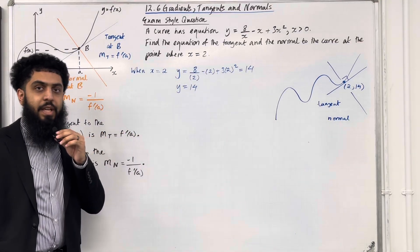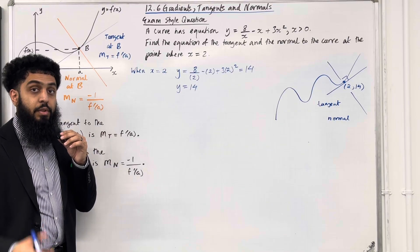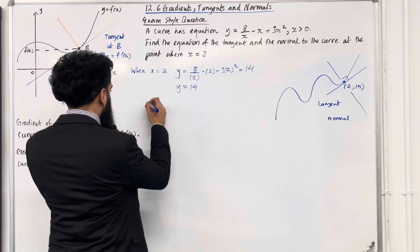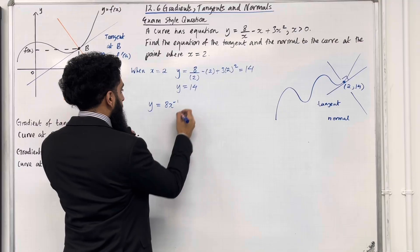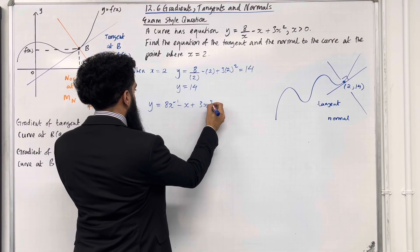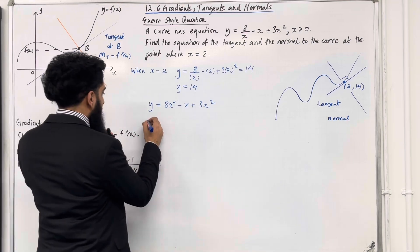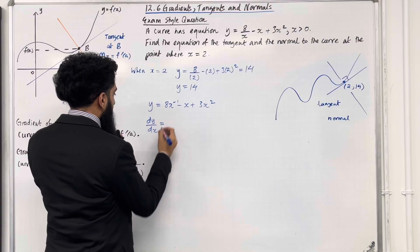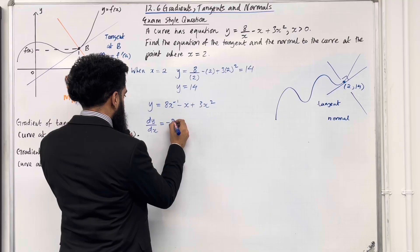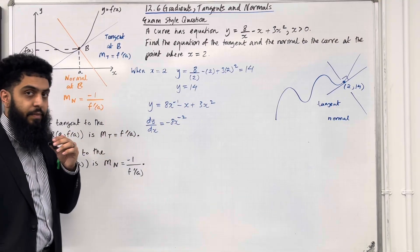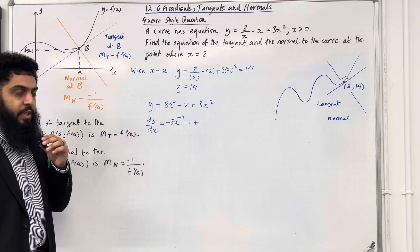Now we need to work out the gradient of the tangent and the gradient of the normal to the curve at x equal 2. To do this, we first find the gradient function. We can rewrite the first term as 8x to the power minus 1, and then we've got minus x plus 3x squared. Now we work out dy over dx by term-by-term differentiation: differentiating the first term gives minus 8x to the power minus 2, the second term gives minus 1, and the third term gives 6x.